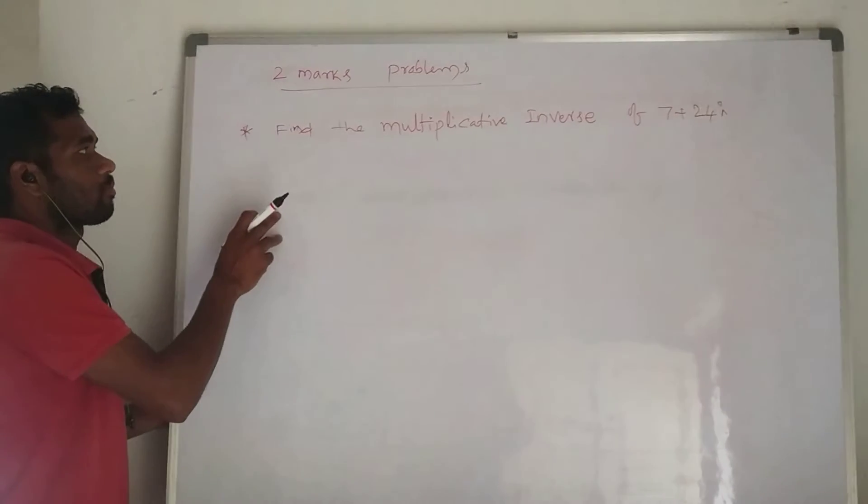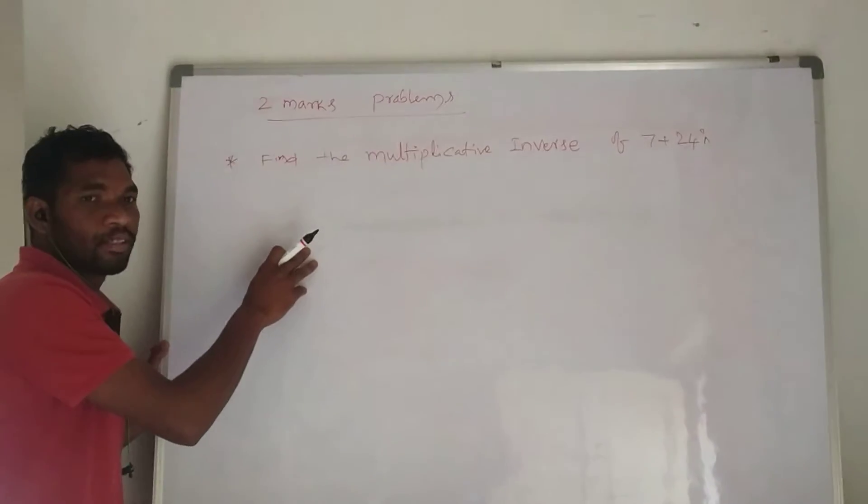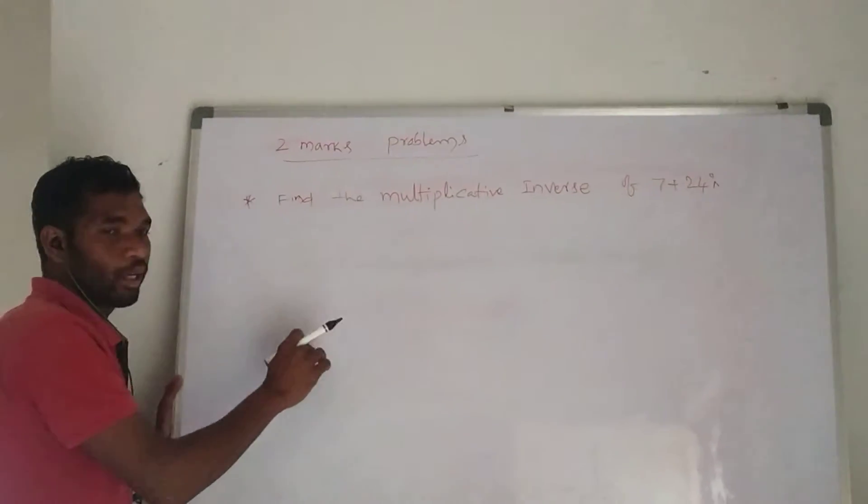There is a two marks problem. Find the multiplicative inverse of a complex number. Find the multiplicative inverse of 7 plus 24i.